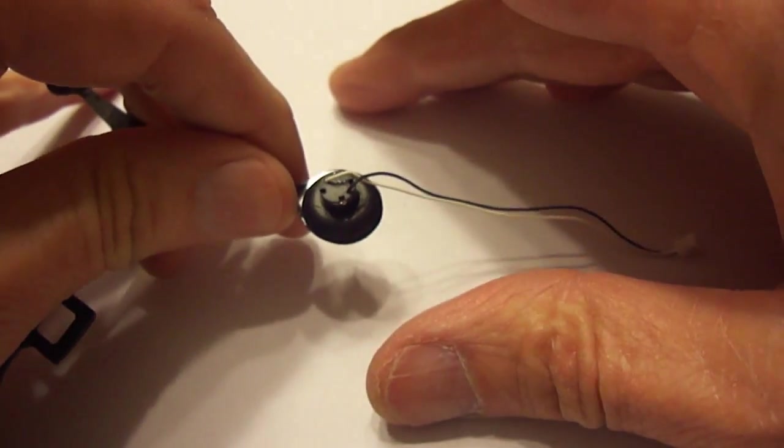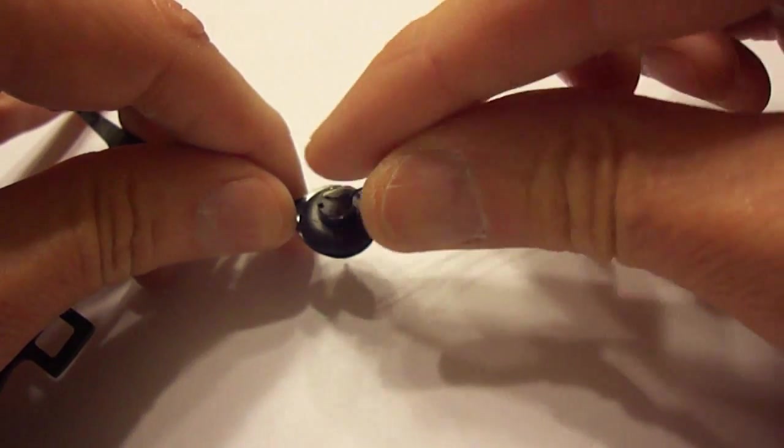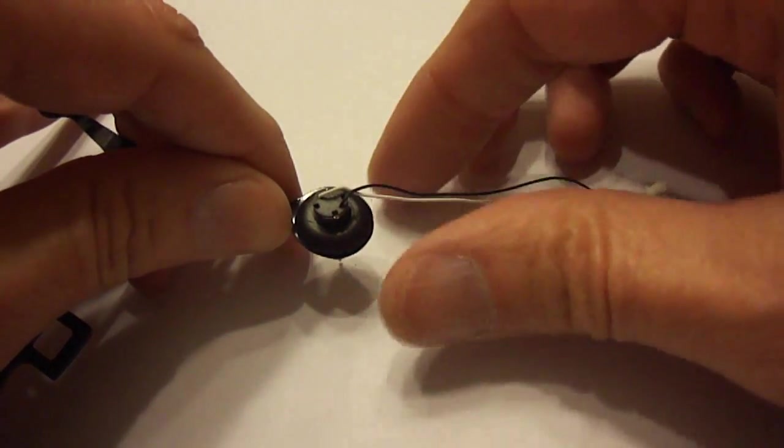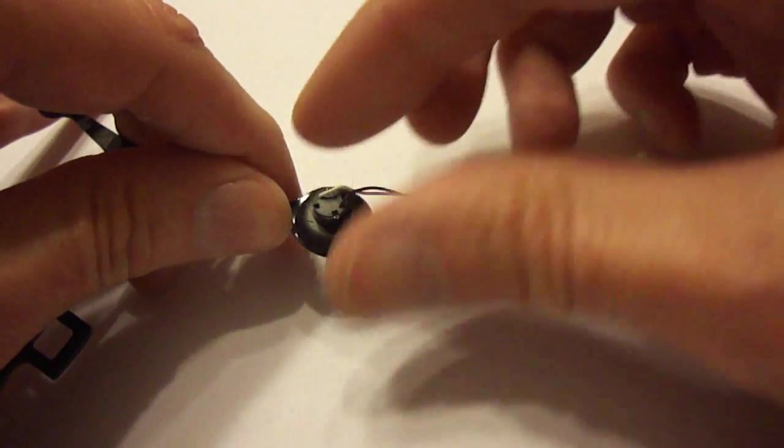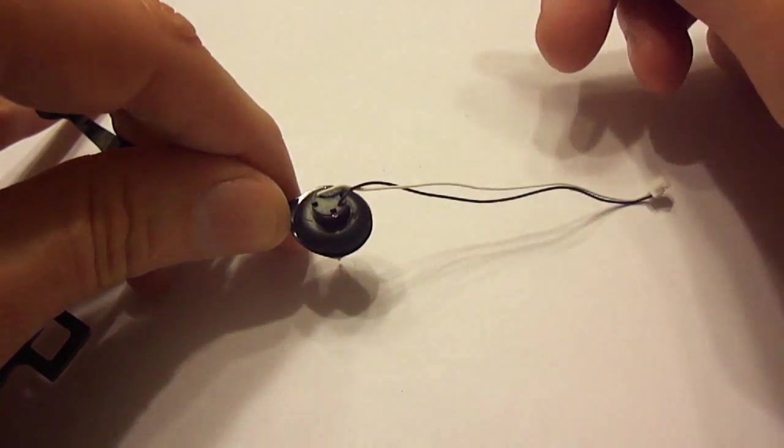One thing I am going to do is put a little bit of hot glue here to secure the motor wires when we are putting the landing pads on and off, or whatever, and make sure that they are not pulled off.